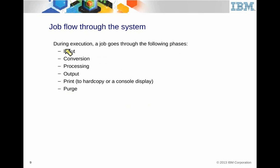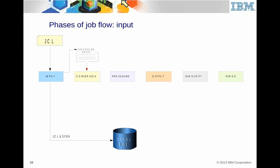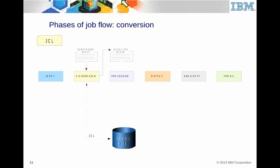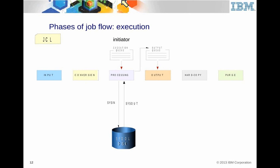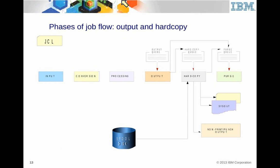JES goes through different flow stages: input, conversion, processing, output, print, and purge. JCL enters the system and goes to the input — it's placed on the spool as the input queue. It then goes through a conversion queue, then the processing queue. As processing completes, output goes to the output queue. There's hard copy processing if it goes to a printer, and once printed, it's purged from the spool. If it doesn't go to a printer, it can remain on the spool indefinitely until someone purges it or an automated command does.